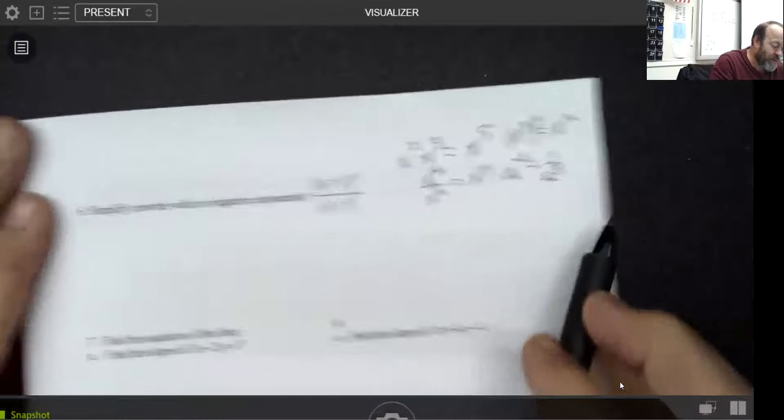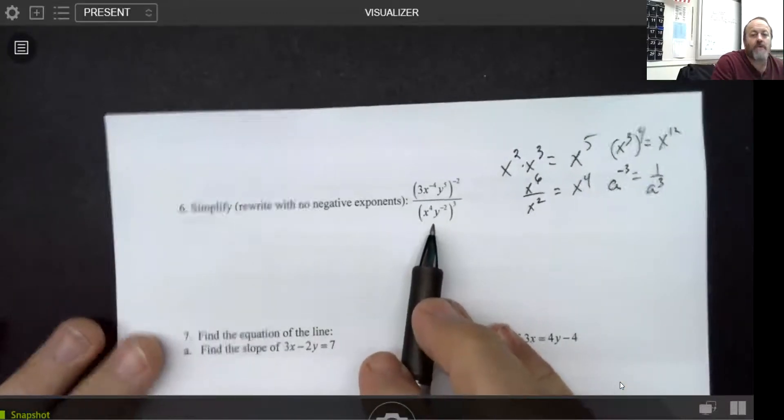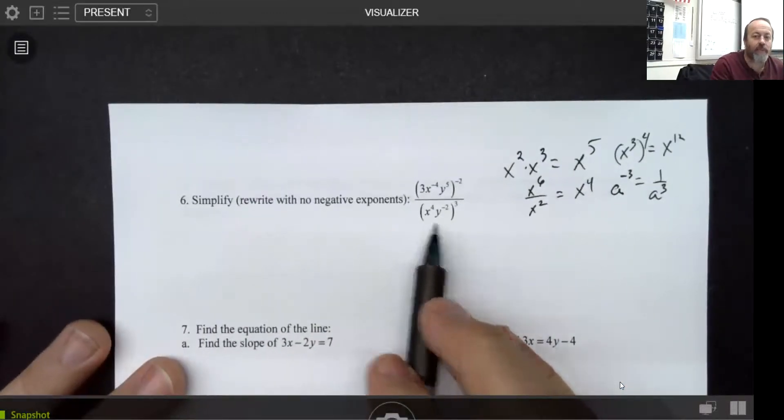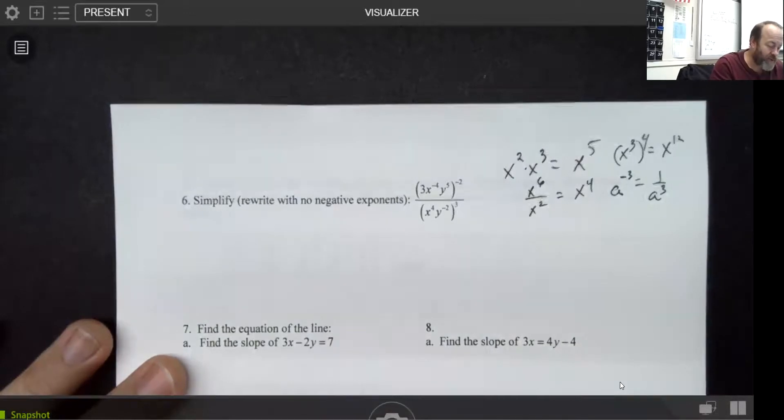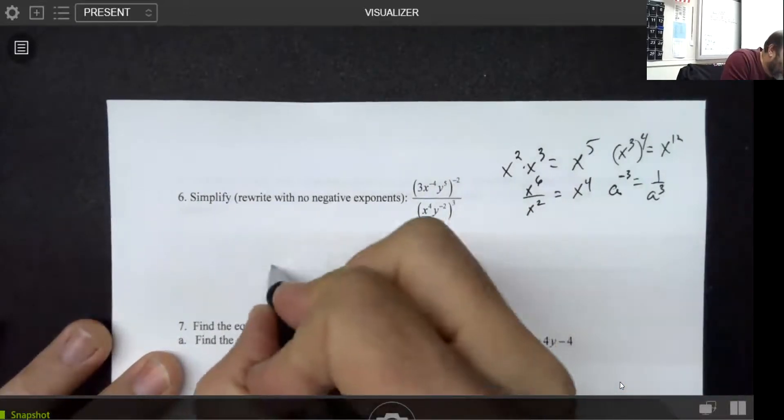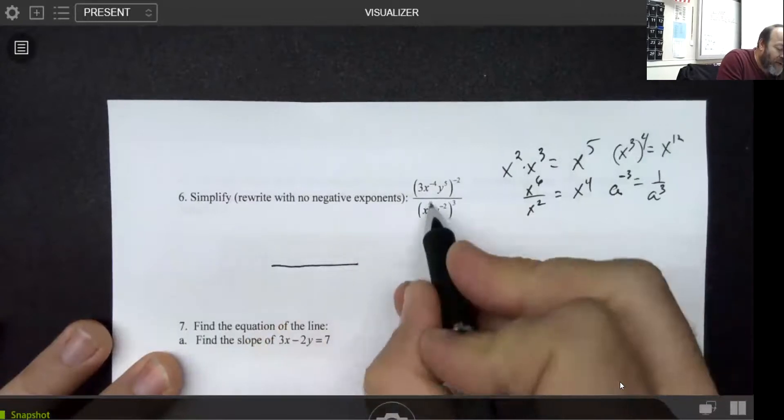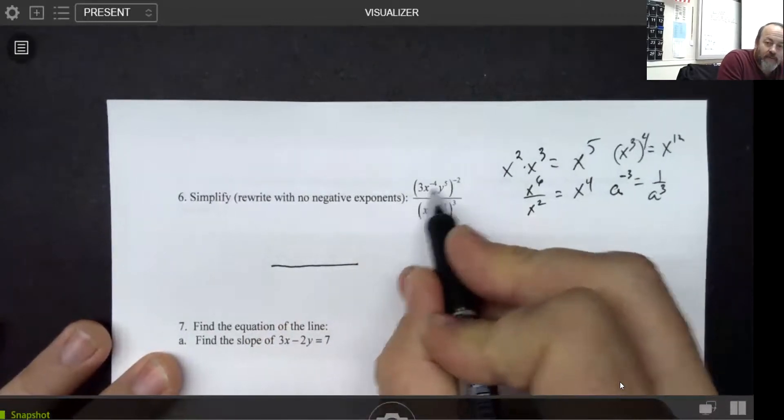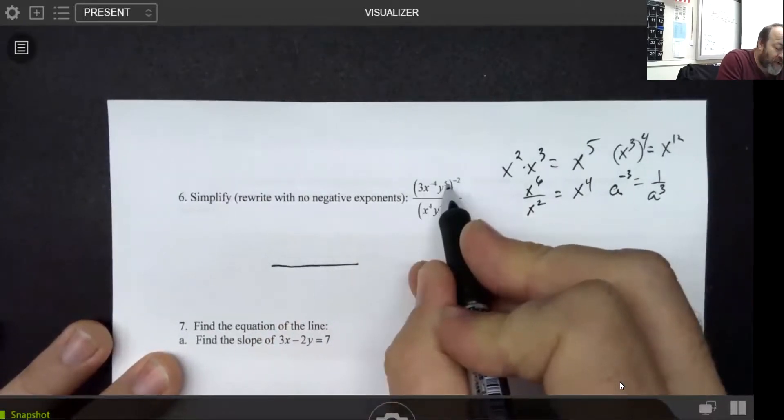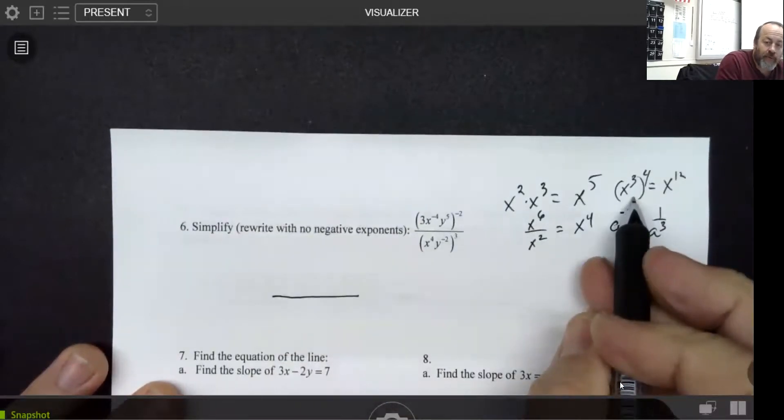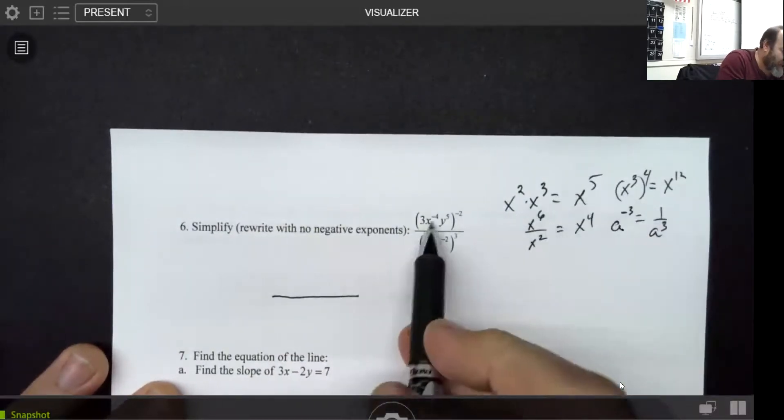So when we look at number six, like I said, it wouldn't be directly on the assessment, but there may be pieces of it that show up here and there. So there's a couple of things that I personally like to do. When I look at this, I would have a negative four times negative two, according to the rule that I have listed over here. You multiply those two exponents, so that would be x to the eighth.